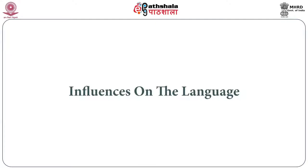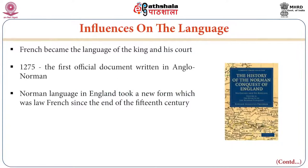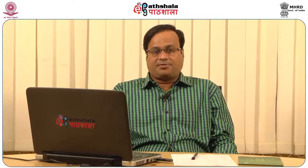Now, the influence on English language. French became the language of the king and his court — the language of aristocracy and those associated with power and control. 1275 marks the first official document written in Anglo-Norman, representing a shift from Anglo-Saxon to Anglo-Norman. This was also a linguistic control, following completion of militaristic control. The Norman language in England took a new form — Low-French — since the end of the fourteenth century. It was a hybrid language, a third language that emerged from interaction between Anglo-Norman and Anglo-Saxon, and became the lingua franca of the people.